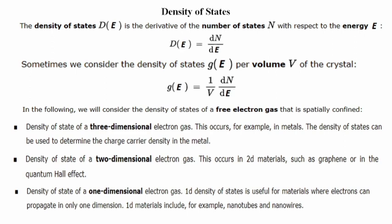We will consider the density of states of a free electron gas that is spatially confined. The density of states of a three-dimensional electron gas occurs in metals and can be used to determine the charge carrier density. The density of states of a two-dimensional electron gas occurs in 2D materials such as graphene, silicene, germanene, or in the quantum Hall effect. The density of states of a one-dimensional electron gas applies to 1D materials like nanotubes, nanowires, etc.